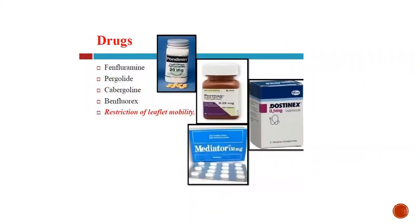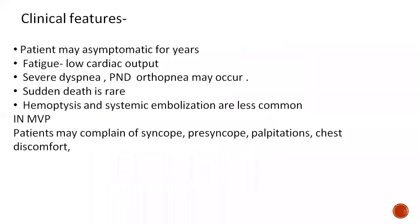Drugs associated with MR include fenfluramine, pergolide, and cabergoline. Regarding clinical features: in chronic compensated MR, patients may remain asymptomatic for years, though they may complain of fatigue due to low forward flow. There may be associated severe dyspnea, PND, and orthopnea in cases of acute MR or severe decompensated MR. Sudden death may be seen but is very rare. Hemoptysis and systemic embolization are less common in MR compared to MS.